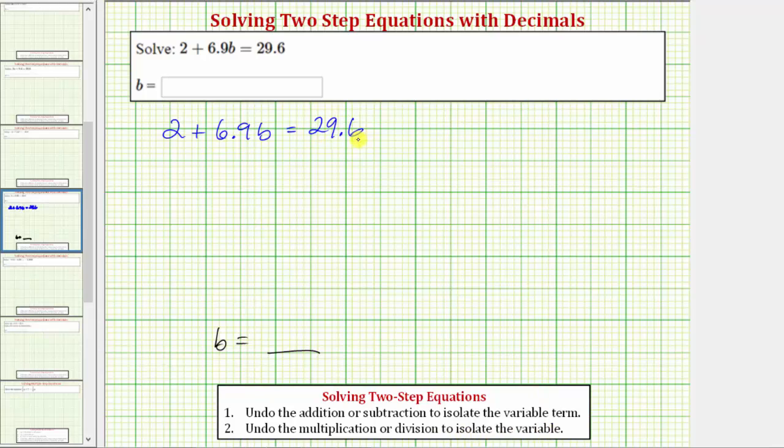We need to be careful on this equation. Because we have plus 6.9b, it might be tempting to try to subtract 6.9 on both sides of the equation. That is not correct because 6.9 is attached to b by multiplication. But we can undo this positive two by subtracting two on both sides of the equation. So our first step is to subtract two on both sides of the equation in order to isolate the variable term 6.9b.